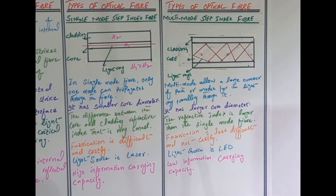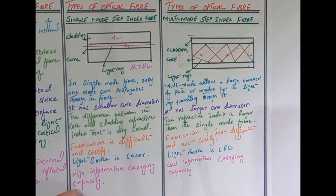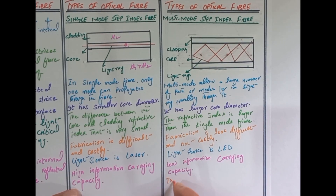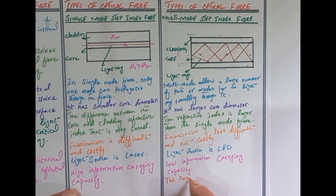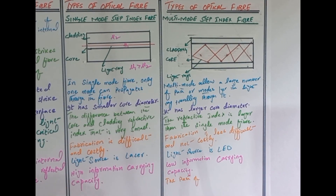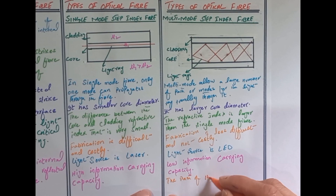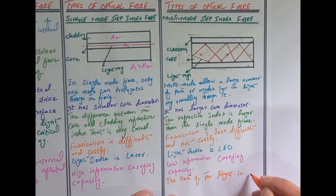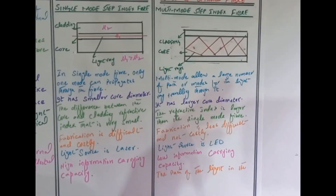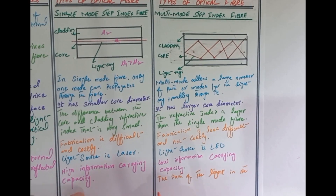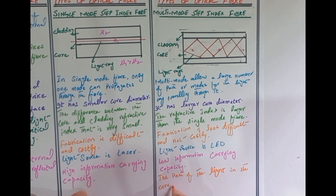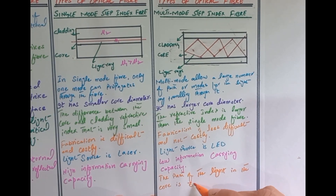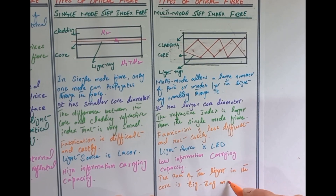Another point is that the path of light in the core is zig-zag.